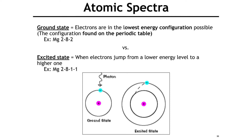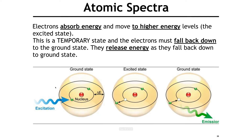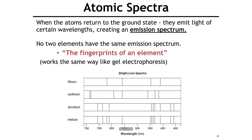Now, atomic spectra. The ground state is the electron configuration as written on the periodic table — the lowest energy. For example, magnesium is 2-8-2. An excited state is when one electron jumps from a lower energy level to a higher one. For magnesium, instead of 2-8-2 it becomes 2-8-1-1. To do that, the electron must absorb energy. Once in the excited state, it's temporary — the electron falls back down, releasing energy as an emission spectrum — light.